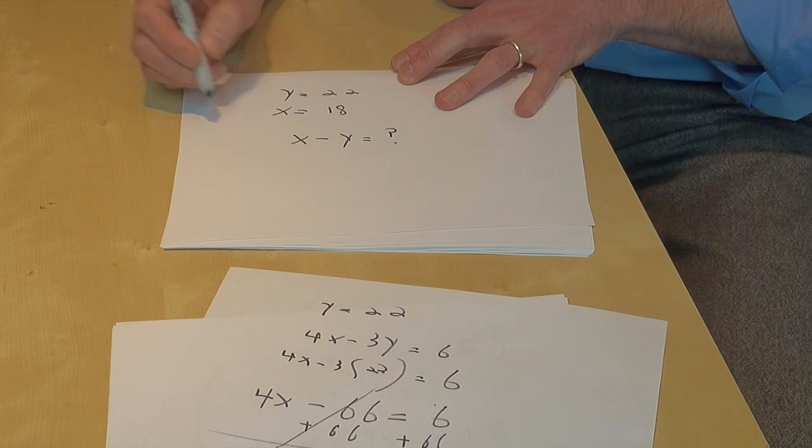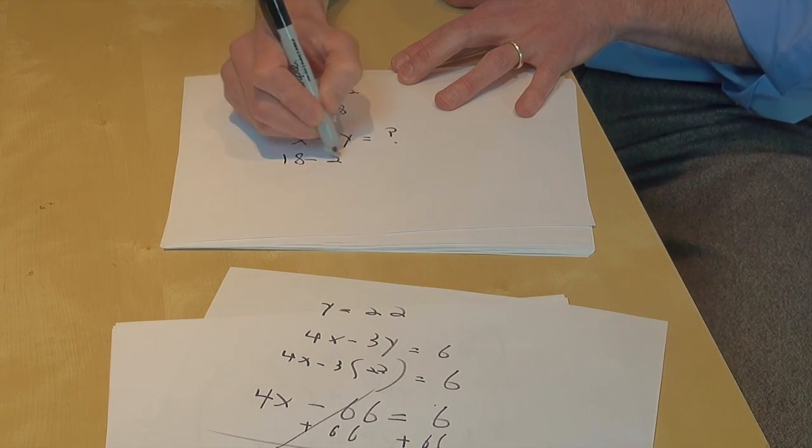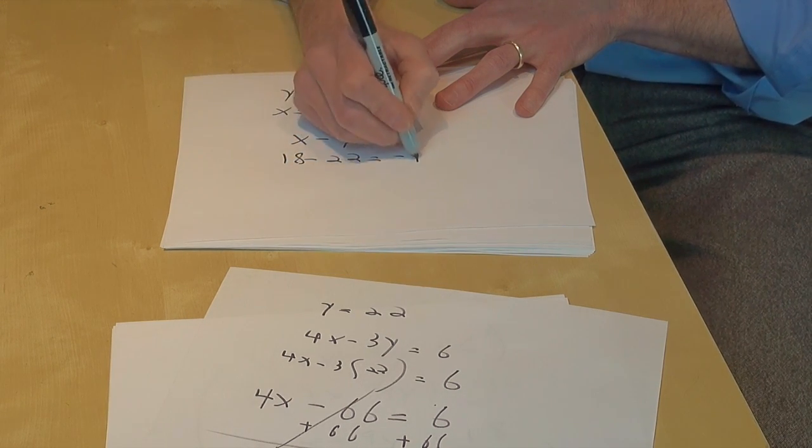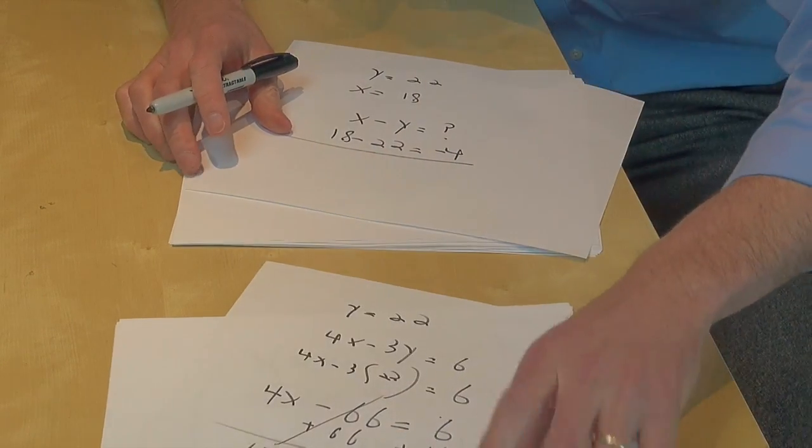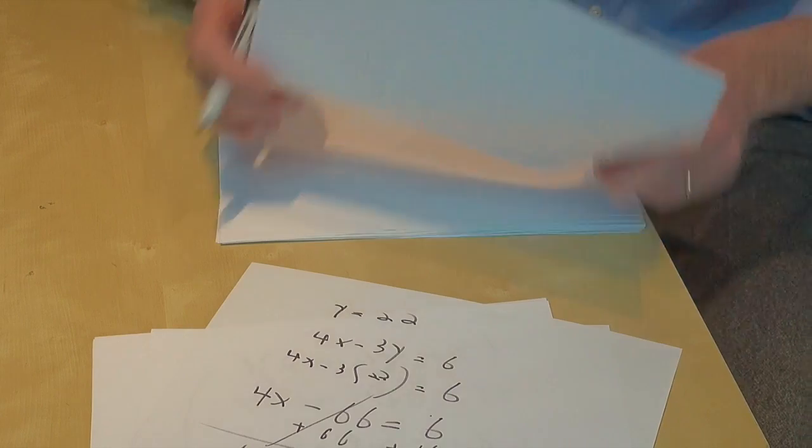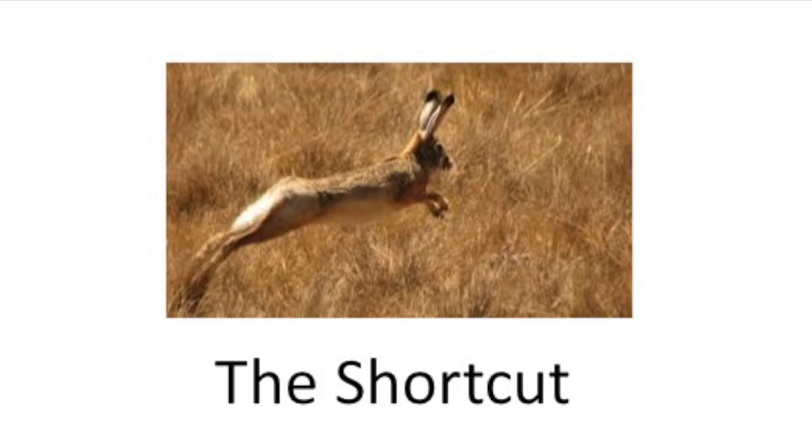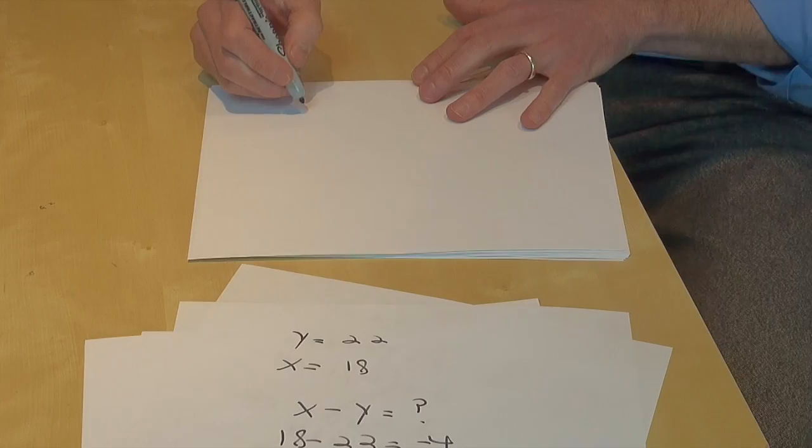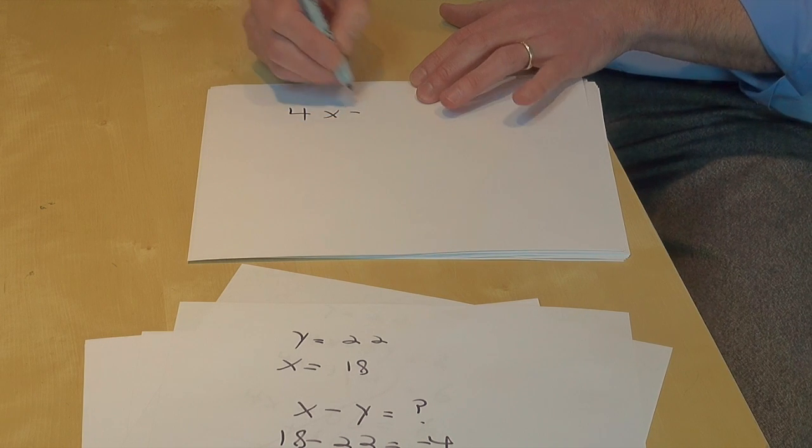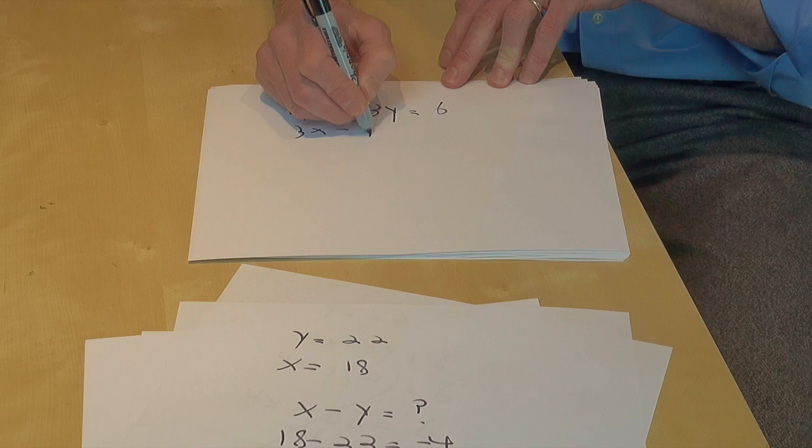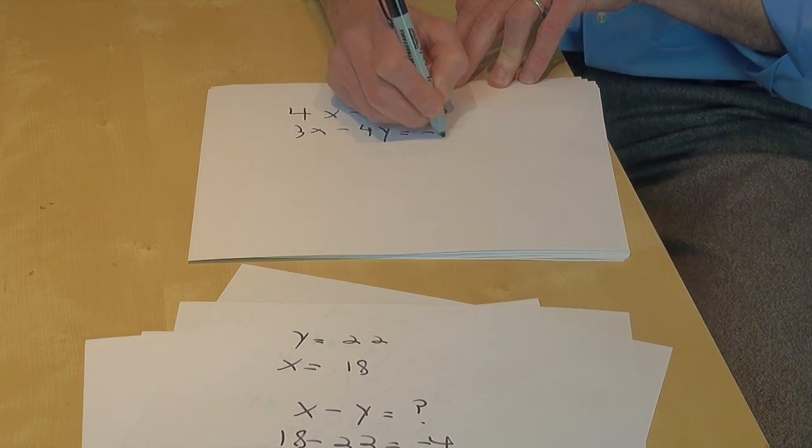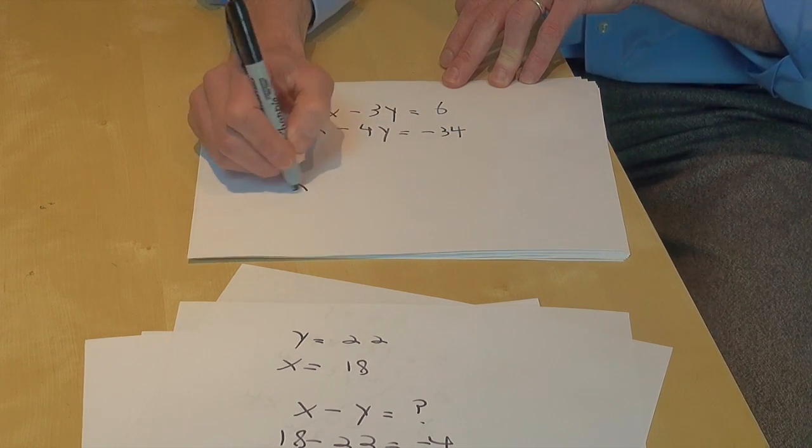What was our original question? I think it was x minus y. That's where we started. What is x minus y equal? 18 minus 22 is minus 4. You're practically a genius. Lovely, lots of paper. Let's see if there's a better way to do it, shall we?